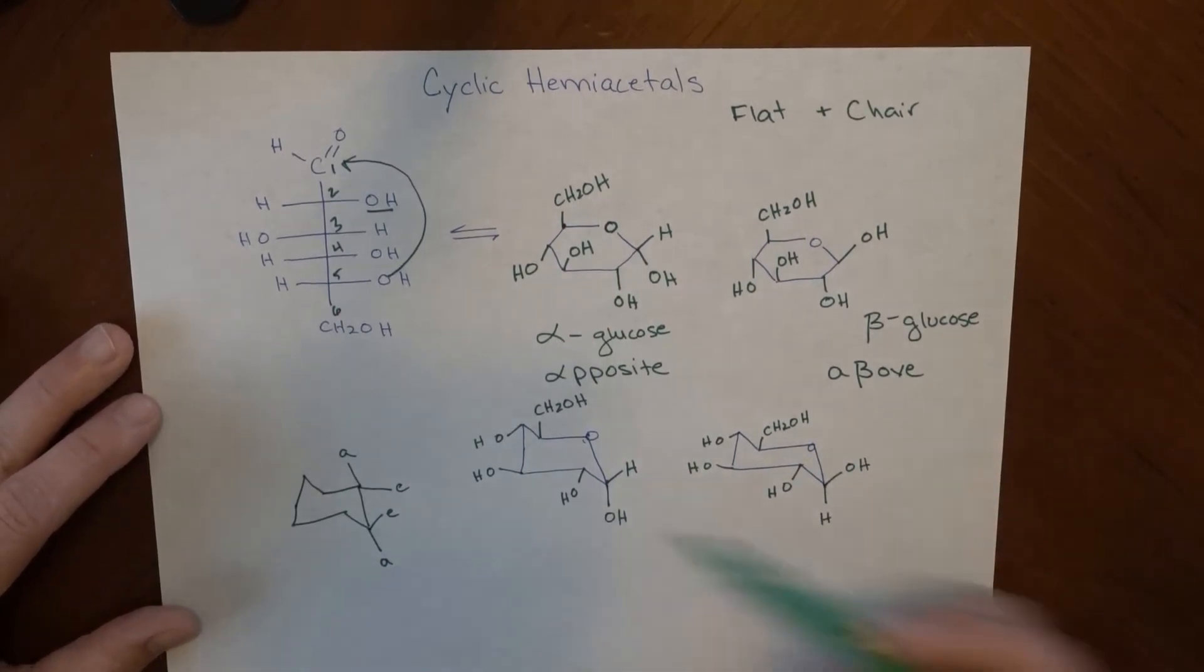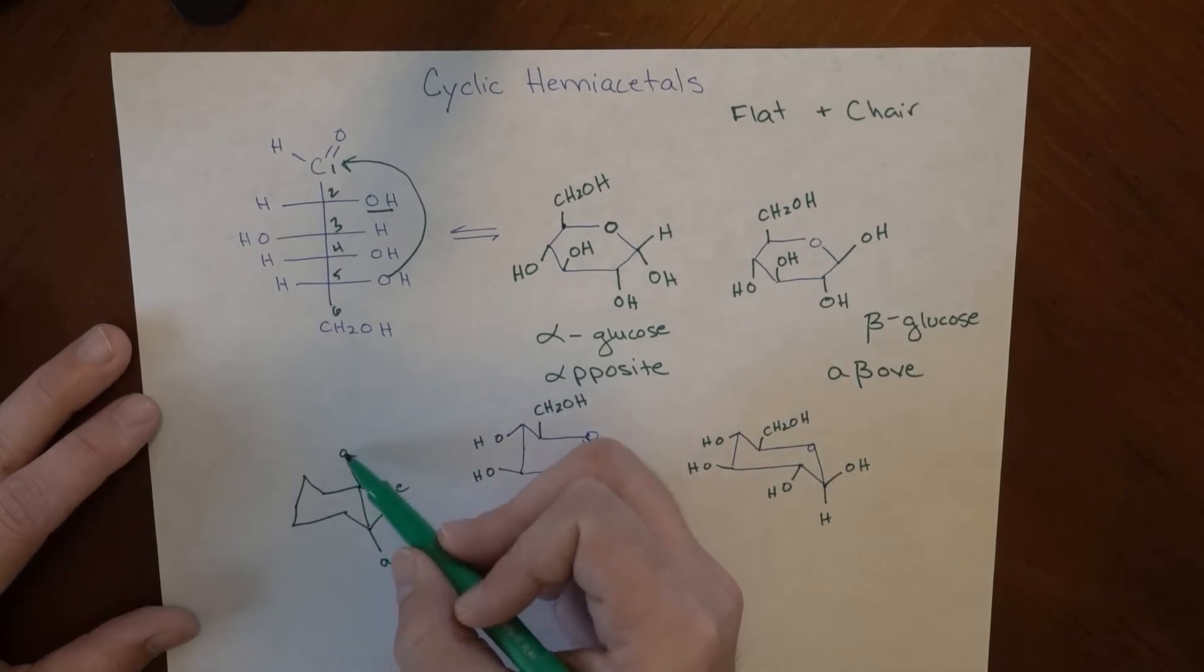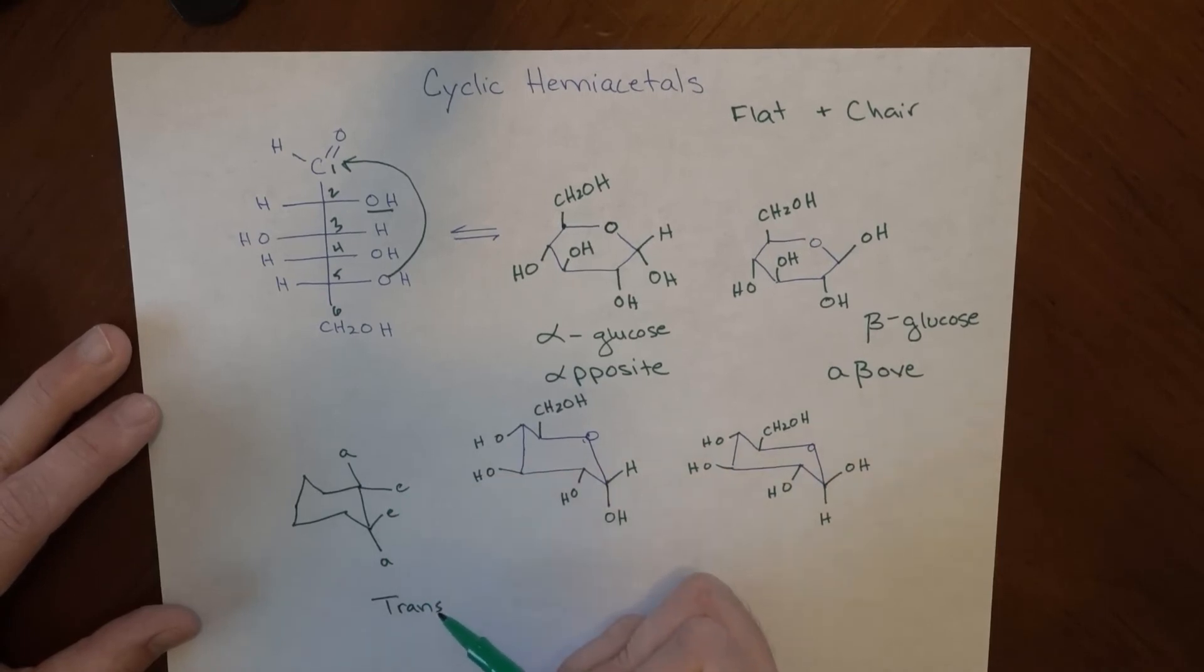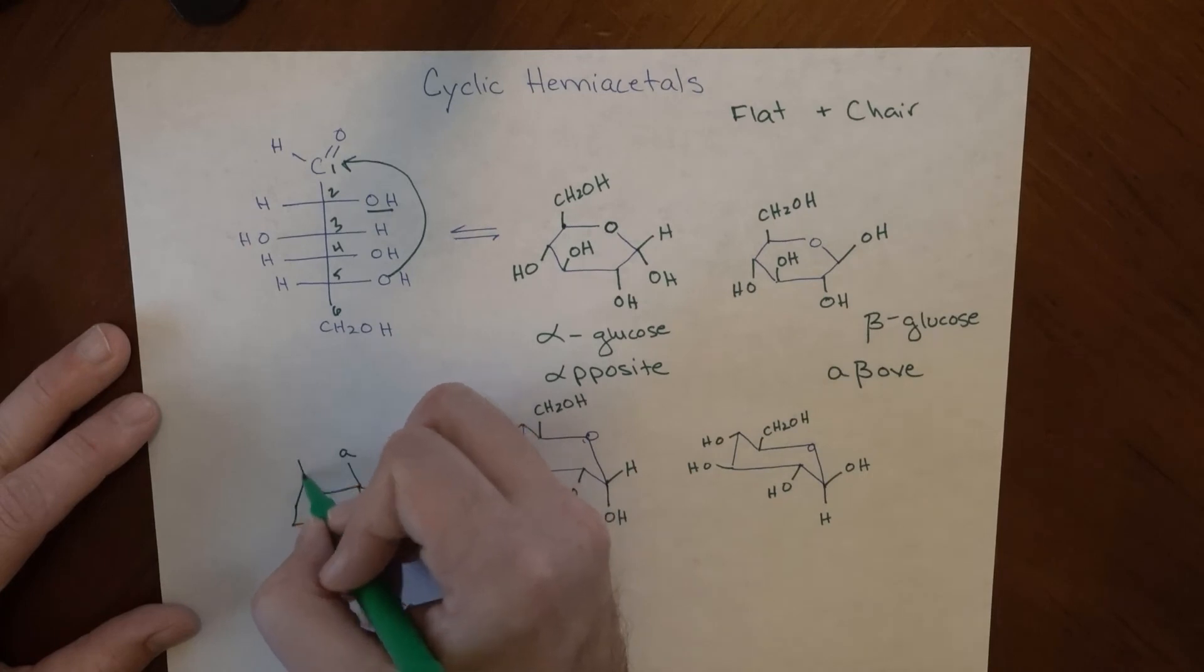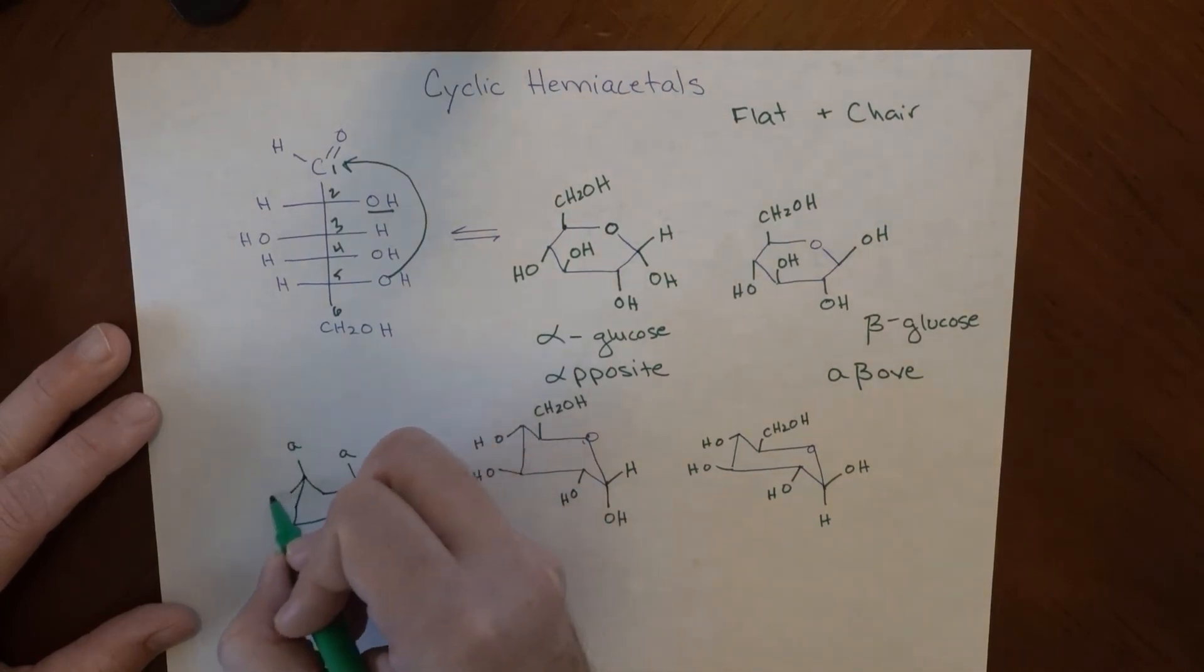Remember, when these two are on adjacent carbons, if it's axial on one and axial on the other, those are trans. And if they are equatorial on one and equatorial on the other, also trans. And if they are one carbon apart, so there's a carbon separating them, these two axials are on the same side, so they'd be cis, and these two equatorials are on the same side, so they'd also be cis.